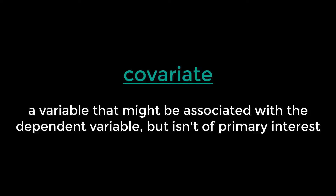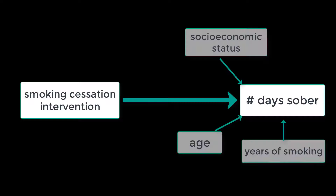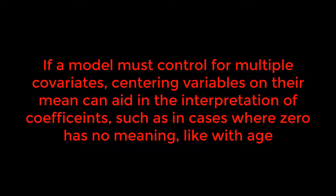While a complicated model that controls for multiple covariates may be technically correct, there is a difference between being correct and being useful. Take this hypothetical example, with a smoking cessation intervention positively correlated with number of days sober at 30 days post-intervention. There may be other variables also affecting sobriety, such as age, socioeconomic status, and years of smoking. If a model must control for multiple covariates, consider strategies that aid in the interpretation of coefficients, such as centering variables on their mean in cases where zero has no meaning, such as with a continuous variable like age.